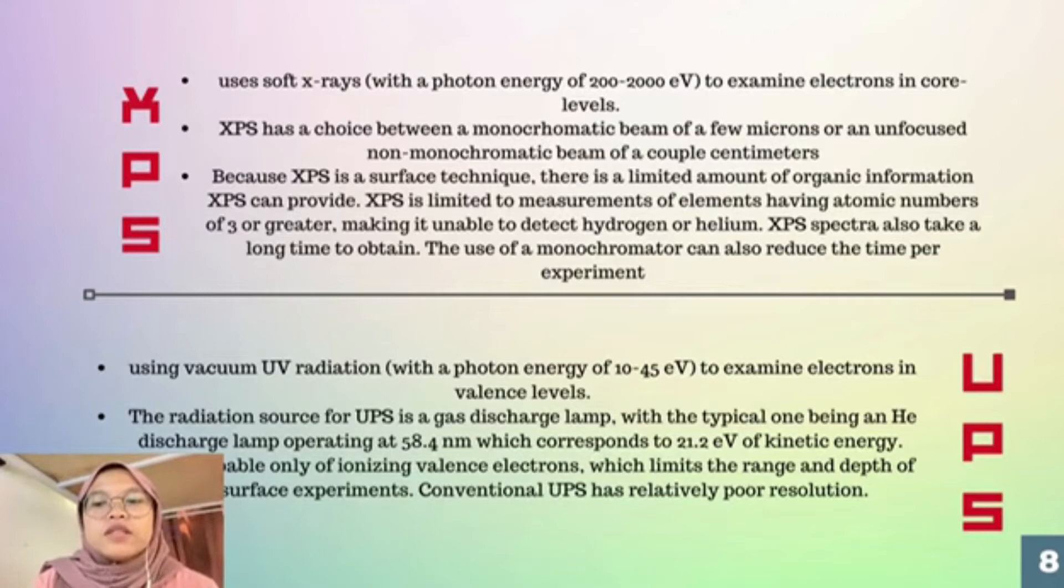The radiation source of UPS is a gas discharge lamp, with the typical one being a helium discharge lamp operating at 58.4 nanometers which corresponds to 21.2 electron volts of kinetic energy.